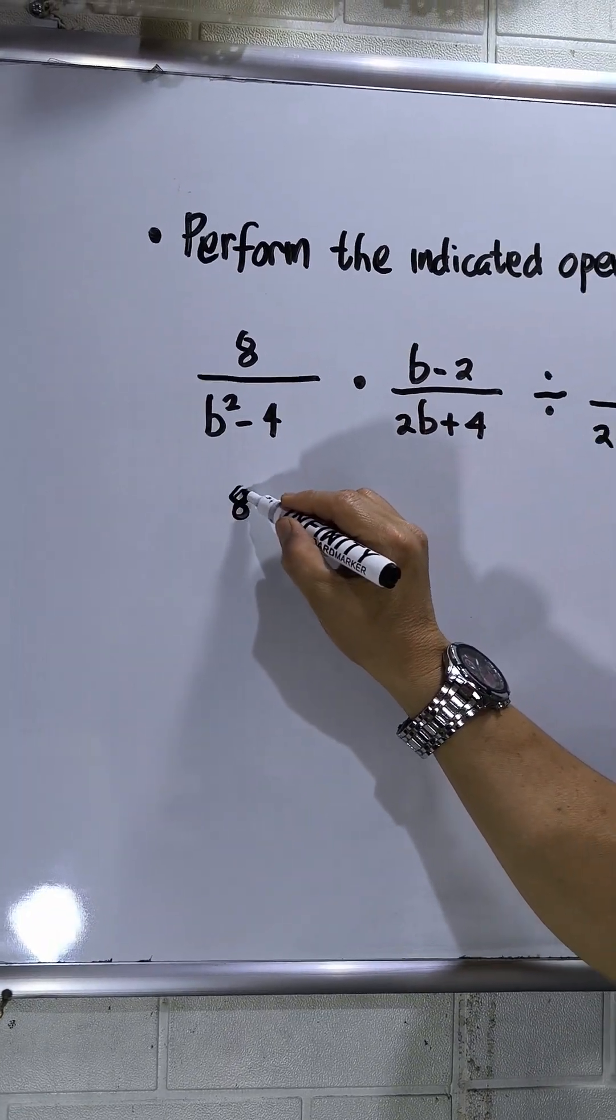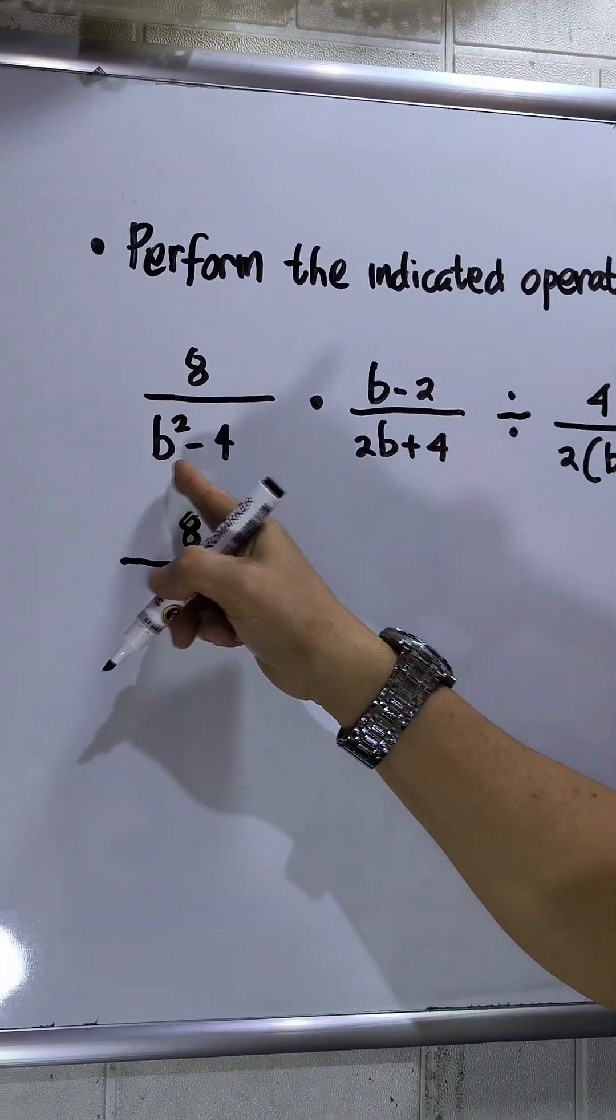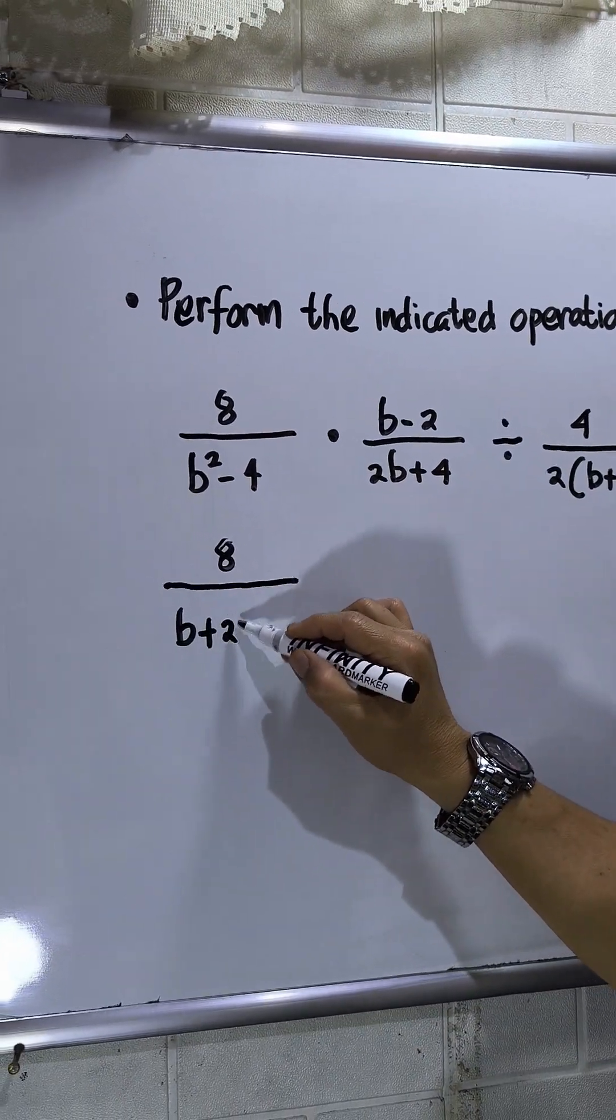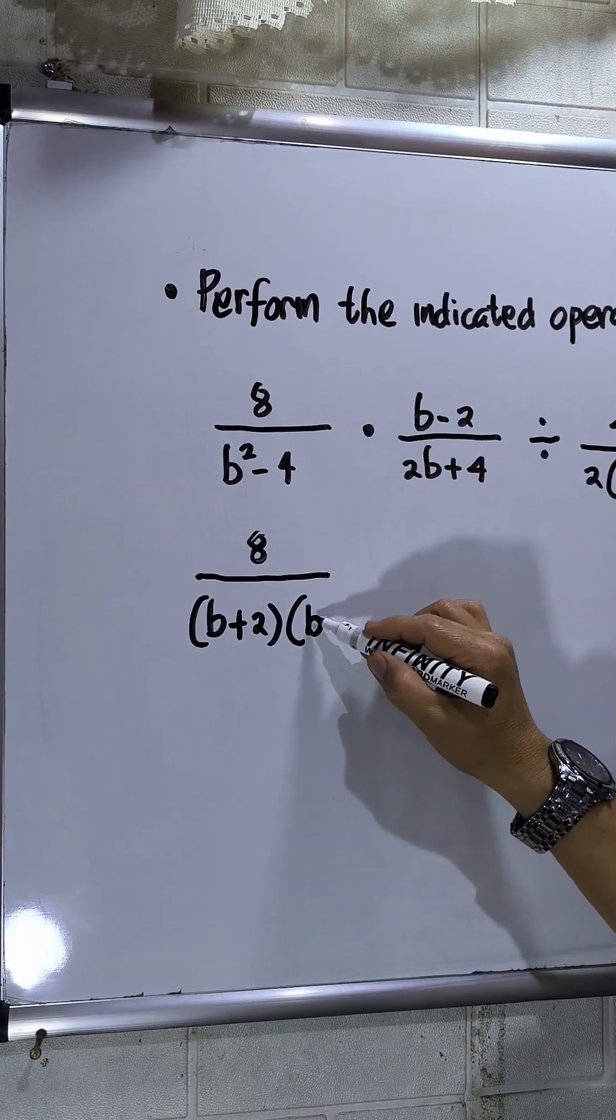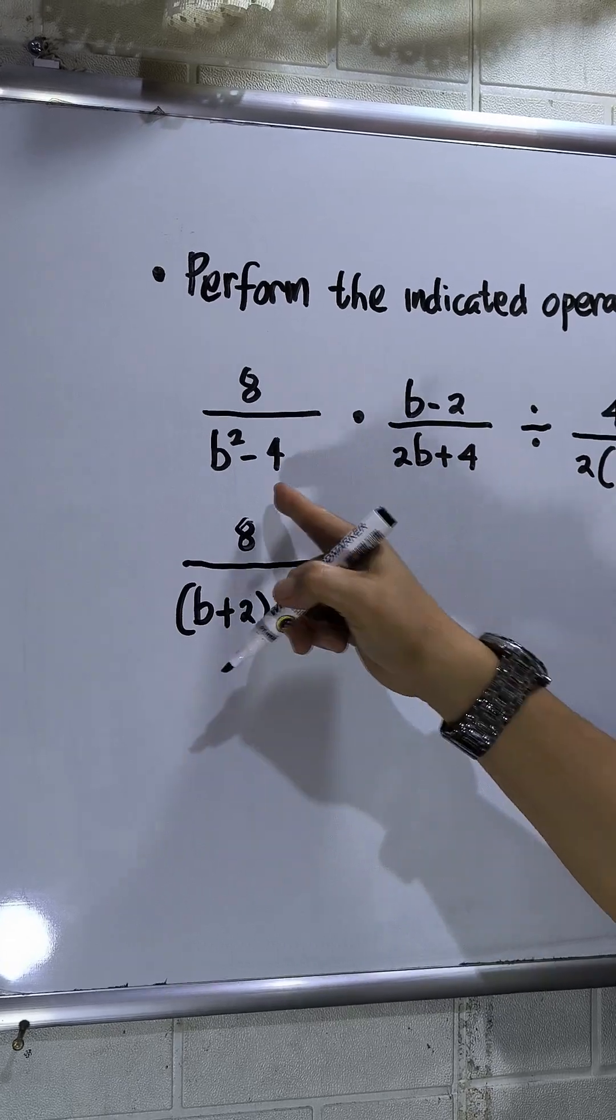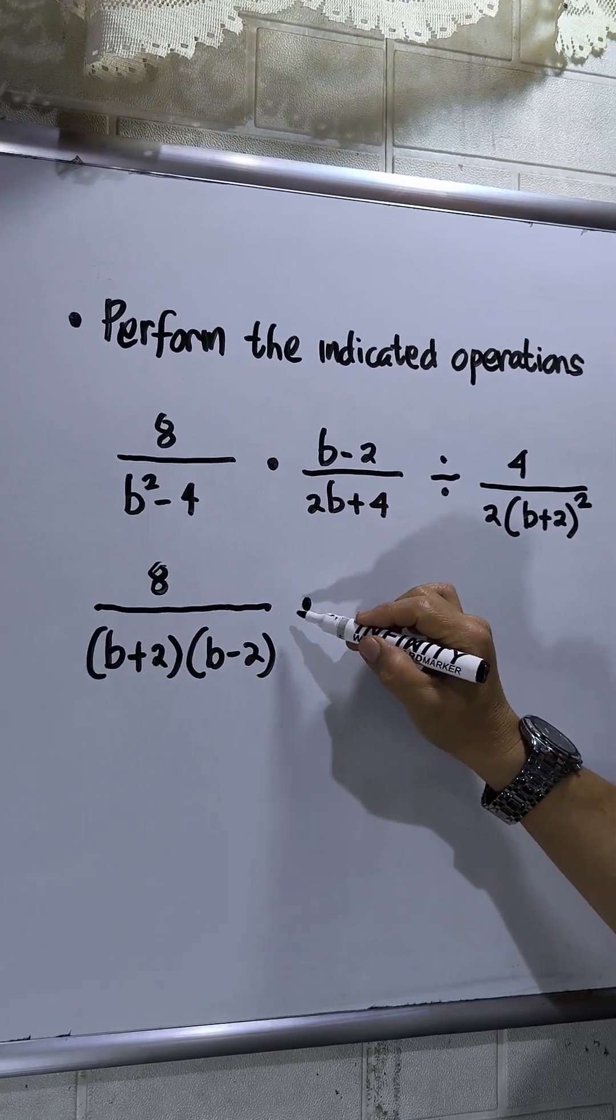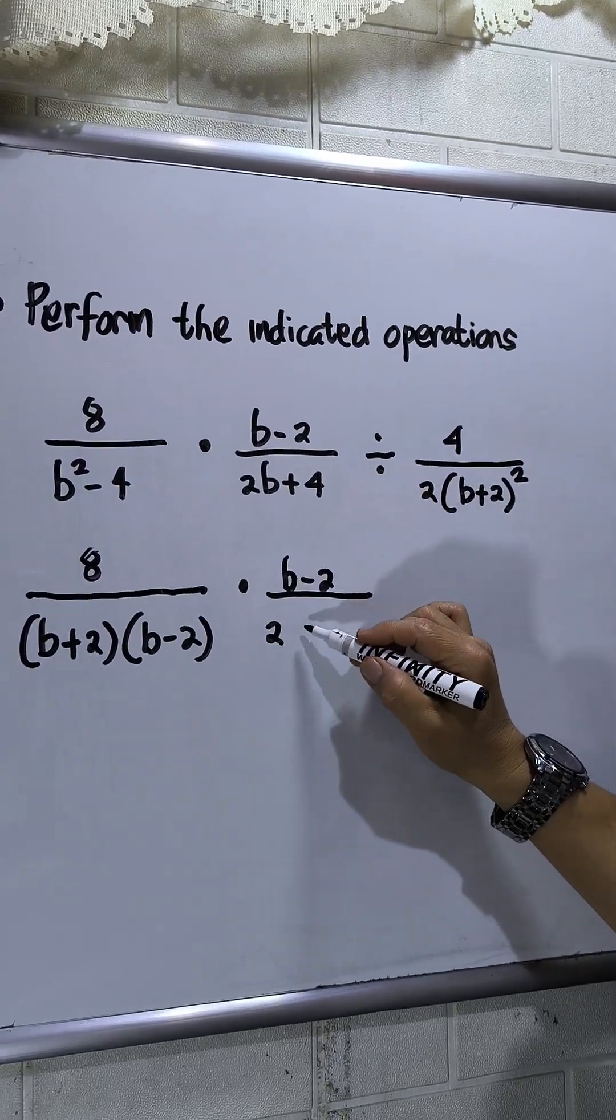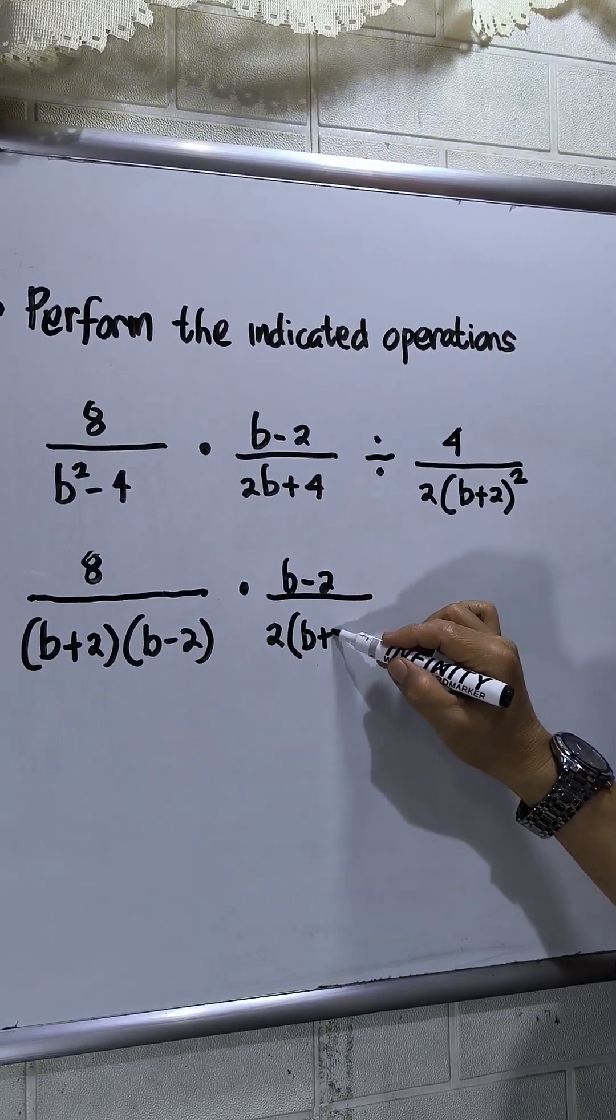First, I need to write the numerator and factor b squared minus 4. This will be b plus 2 times b minus 2, because this is the difference of two squares. Then times b minus 2, and I'll factor out 2 to get b plus 2.